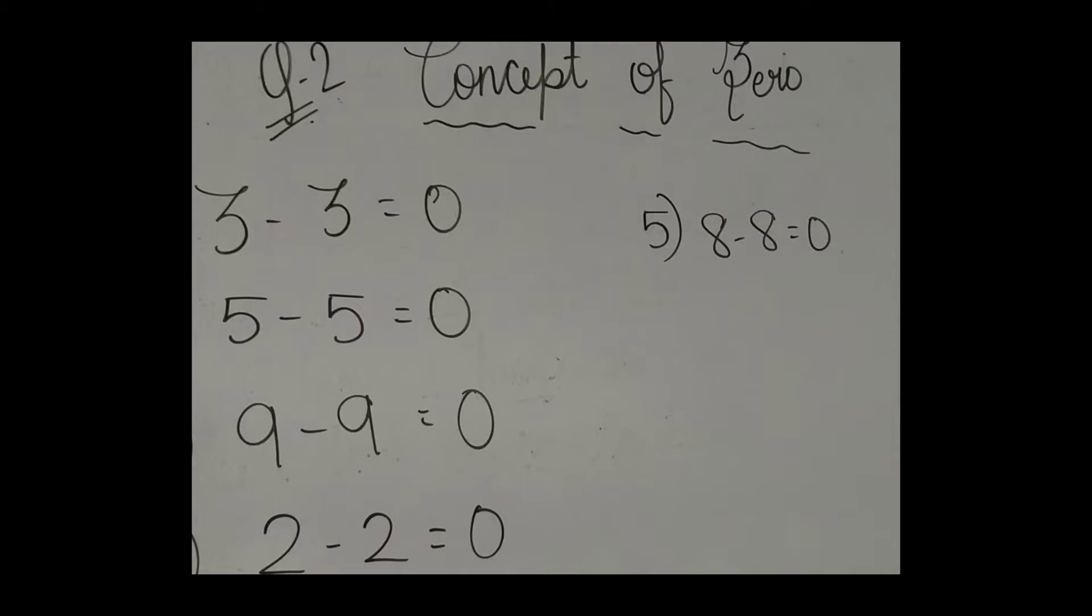For example, you have 5 chocolates. You eat all 5 chocolates. What you will have with you? Yes, 0. So we are writing 0.